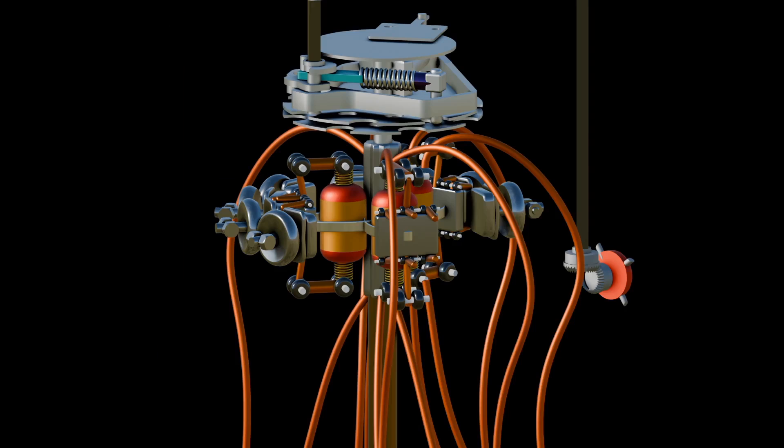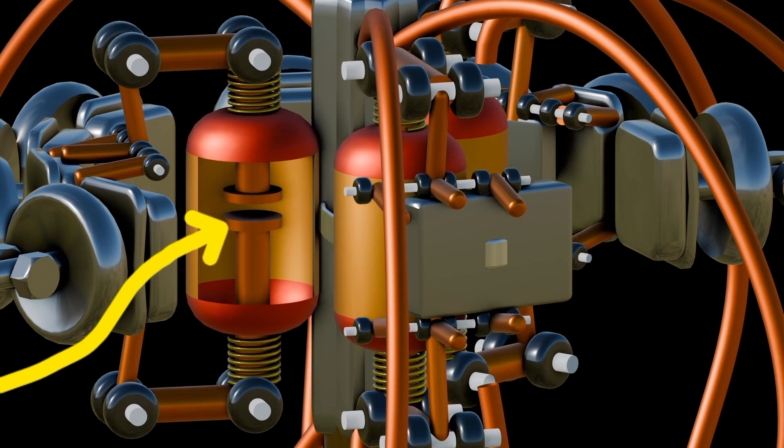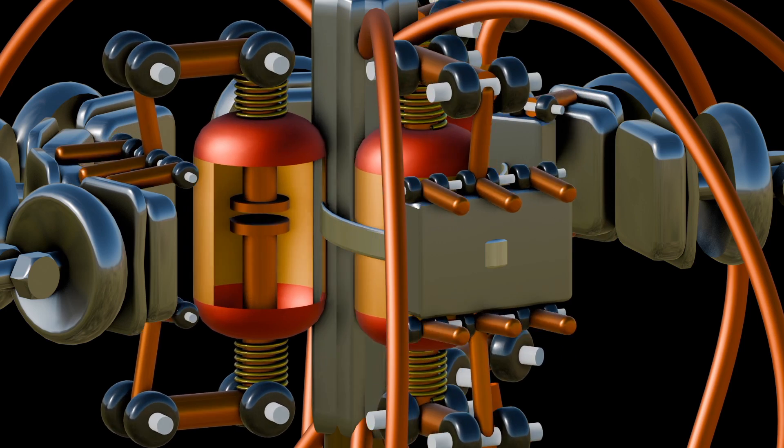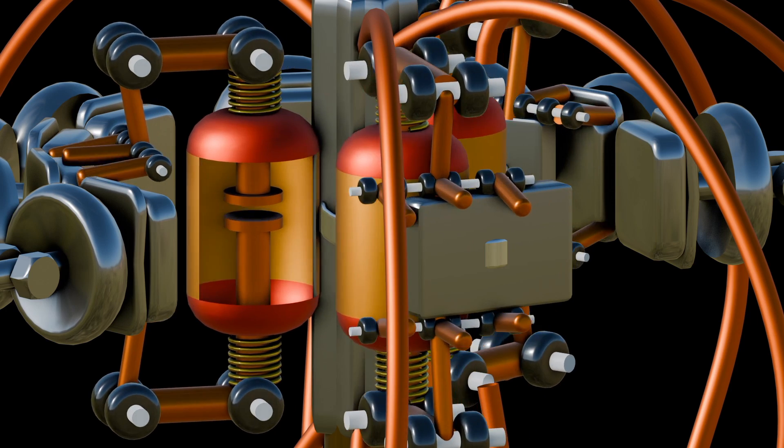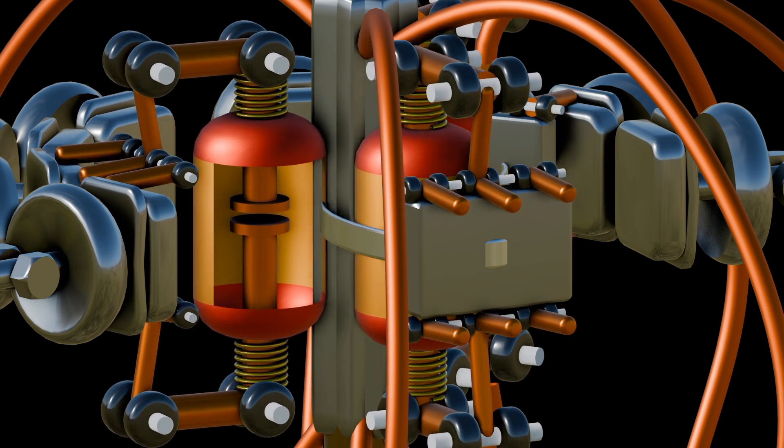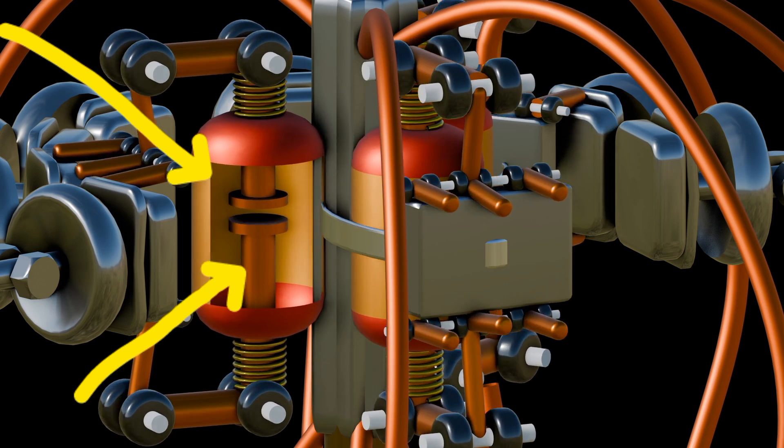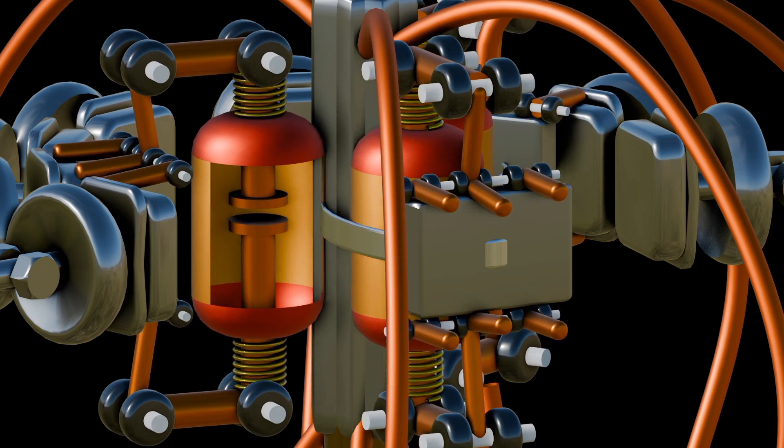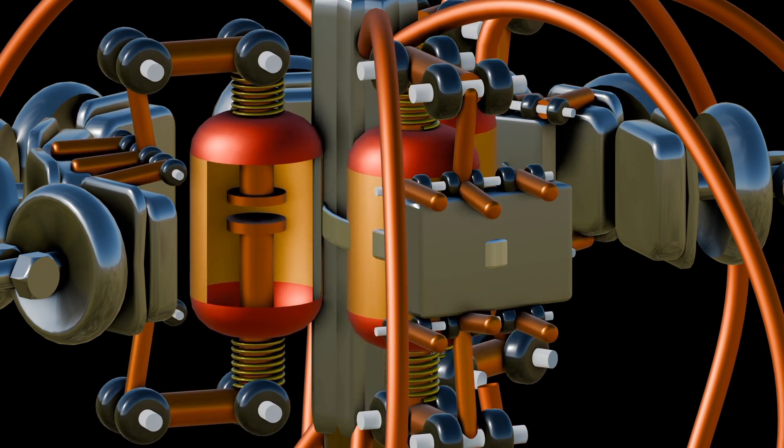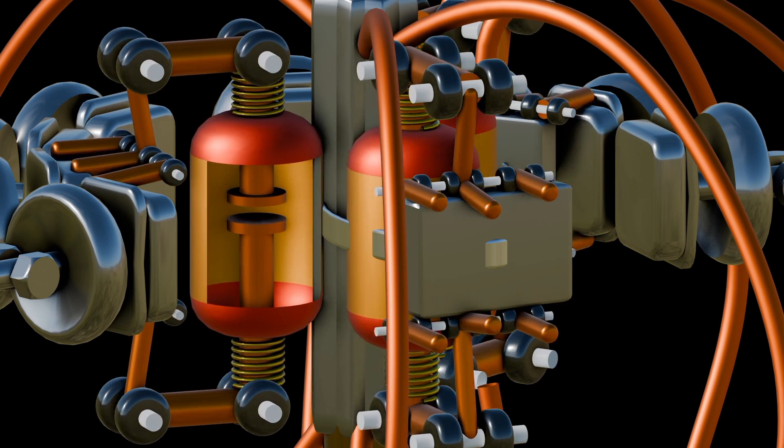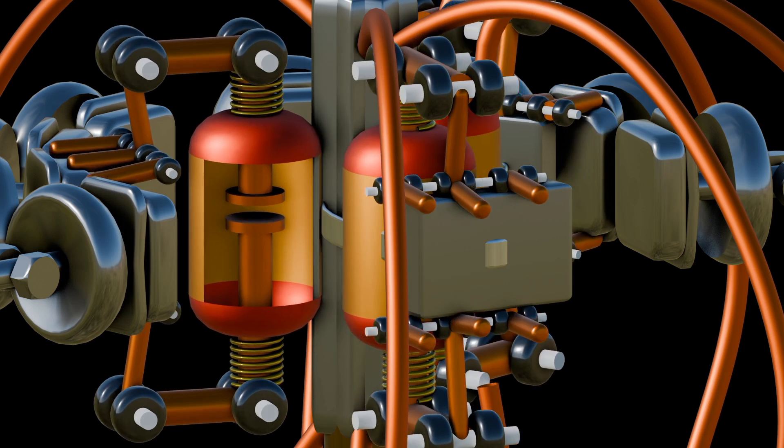We also have vacuum switch, which is responsible for making or breaking the circuit during tap changing operation. A vacuum switch consists of two main components: contacts and a vacuum chamber. The contacts are typically made of materials such as copper or silver, and they are housed within a vacuum chamber. The vacuum chamber is sealed to create a vacuum environment.